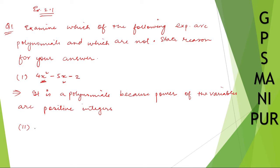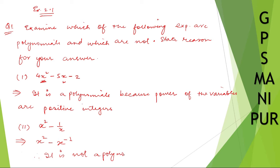Roman number two: x squared minus one by x. I can take x up here and it will be x to the power minus one. So this is not a polynomial. Why? Because the power of x is negative — that is, minus one — so the degree is negative, and that is the reason.